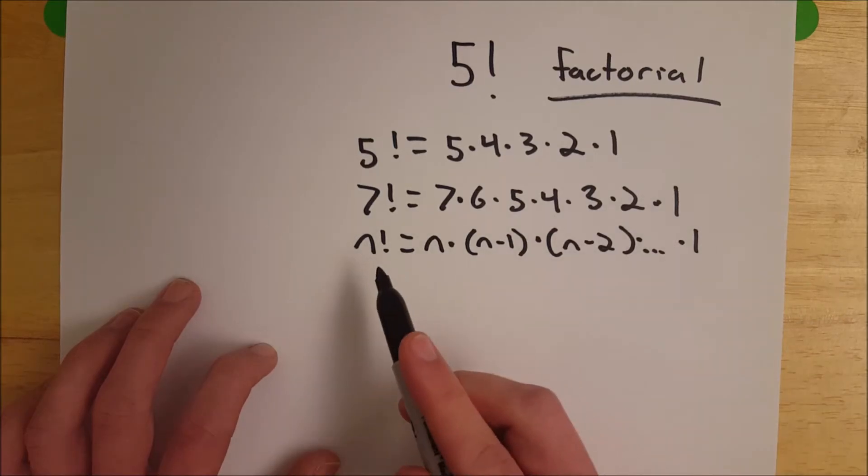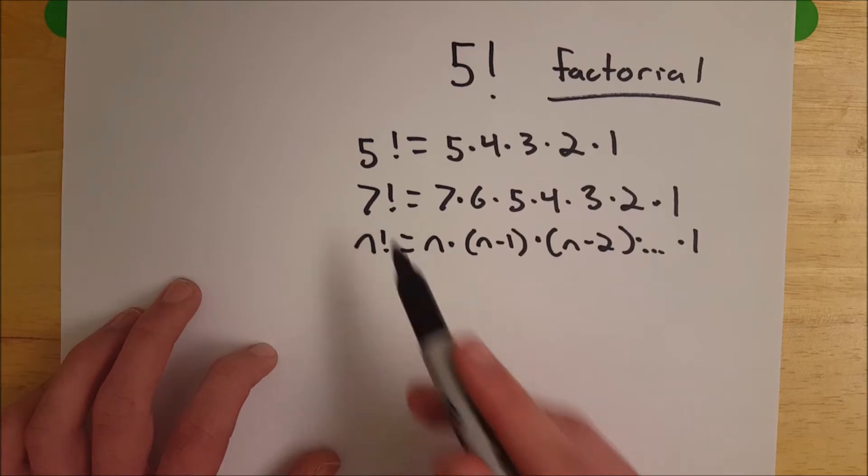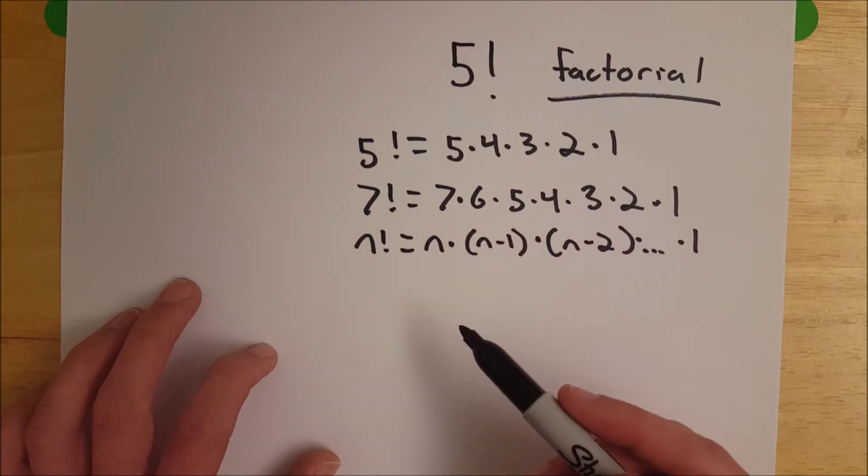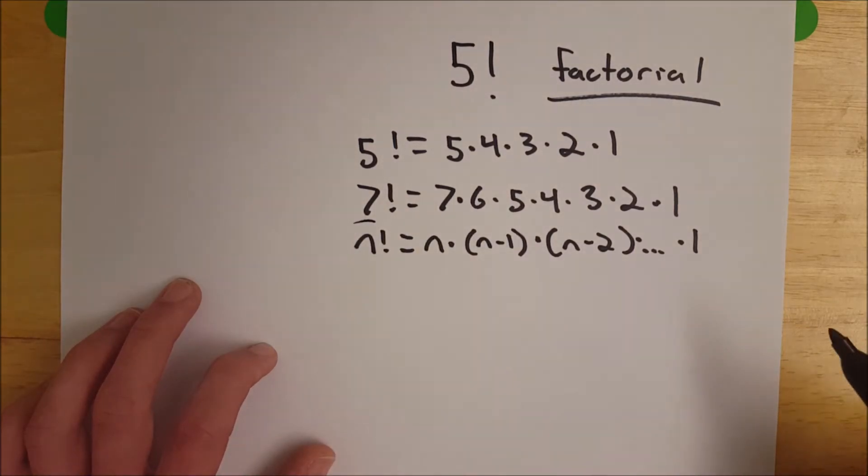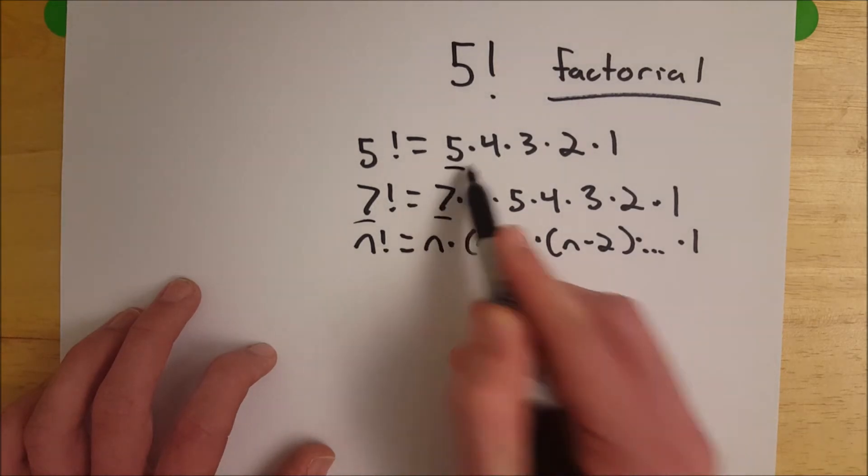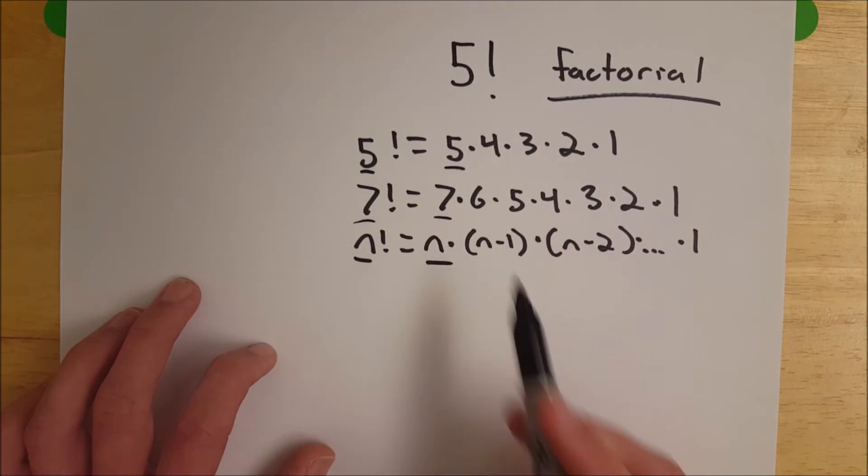So you take a number, and if you've got any number factorial, that is the product of all positive integers less than or equal to that given number. So remember that it's less than or equal, so it's going to include the number itself—n, seven, five—and then multiplied by all of the other positive integers going down to one that are less than it.